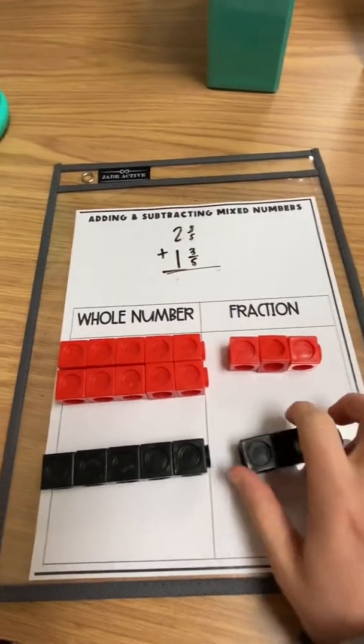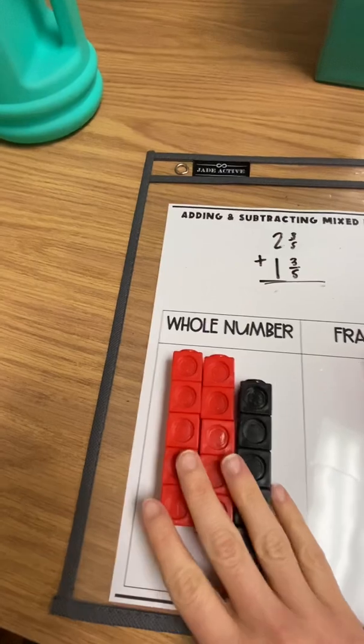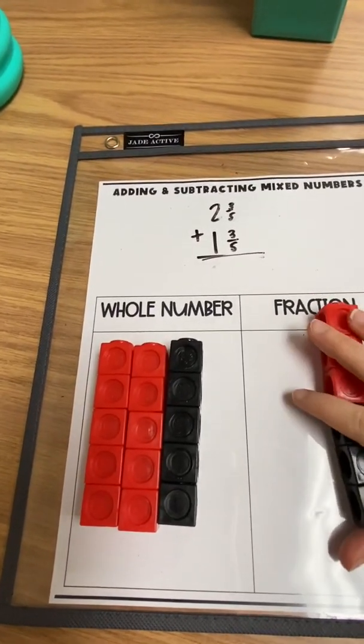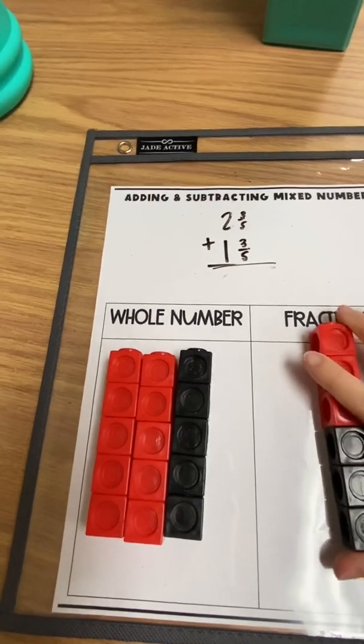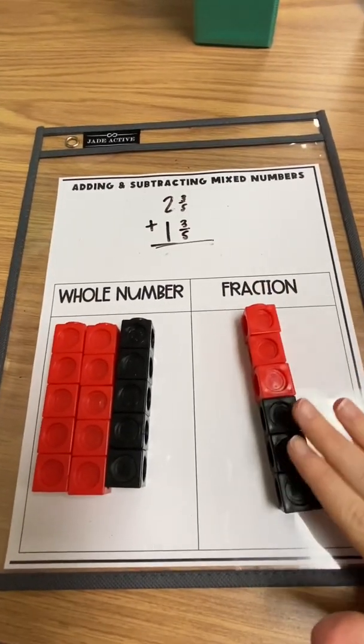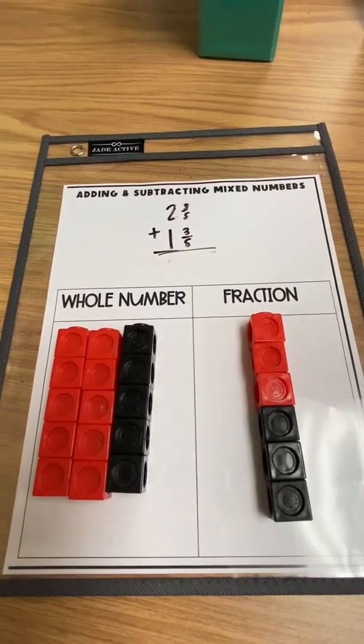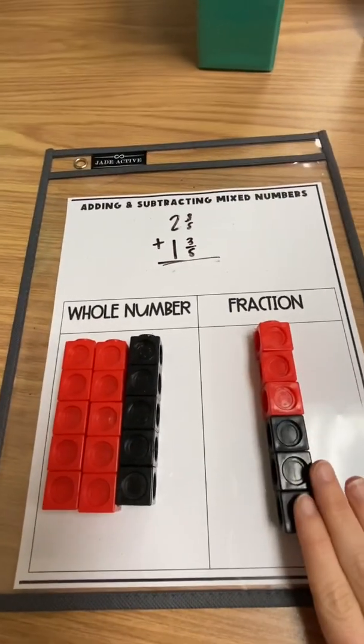So when students combine, they'll see that the 2 holes plus the 1 hole has given them 3 holes. And that the 3 5ths plus 3 5ths is now 6 5ths. Now a lot of times students will leave it written that way. They'll write 3 and 6 5ths.